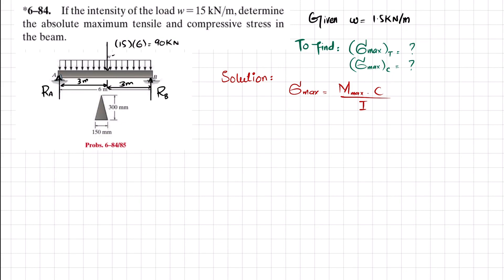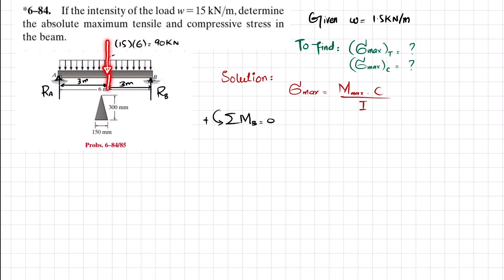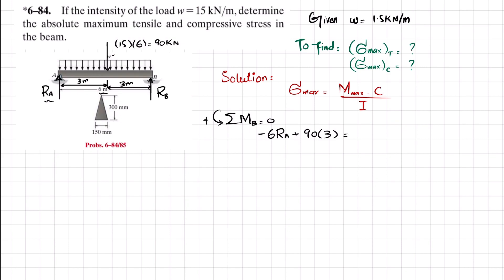Applying the first equation of equilibrium: sum of all moments about point B equals zero, taking counterclockwise as positive. The moment due to R_A is clockwise (negative), with perpendicular distance 6. The moment due to the 90 kN load is counterclockwise (positive), with perpendicular distance 3. So: −R_A × 6 + 90 × 3 = 0, giving R_A = 45 kilonewtons.